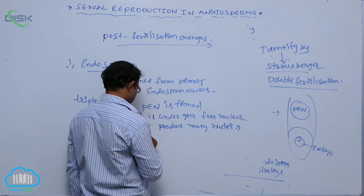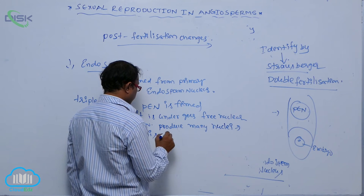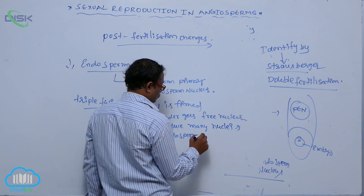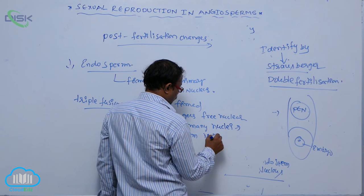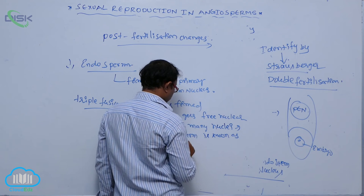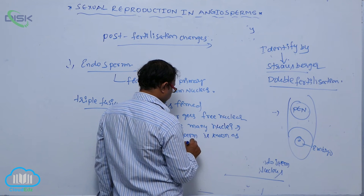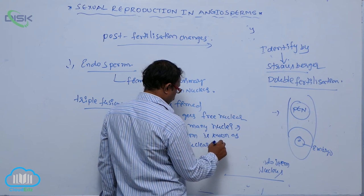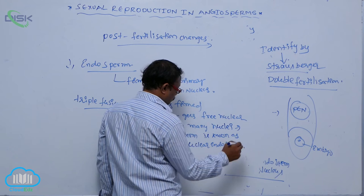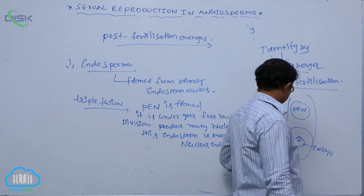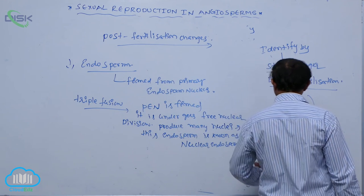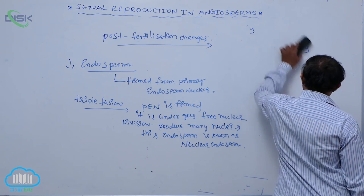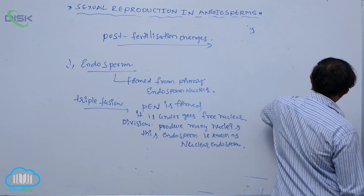So this endosperm is known as nuclear endosperm. After that, formation of the nuclear endosperm, cell wall formation occurs centripetally.